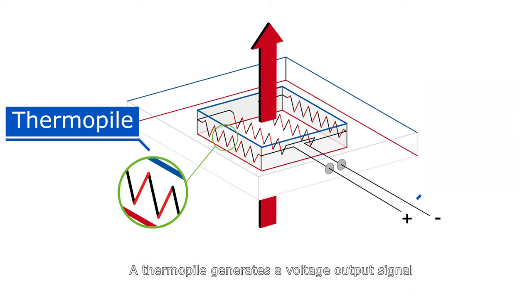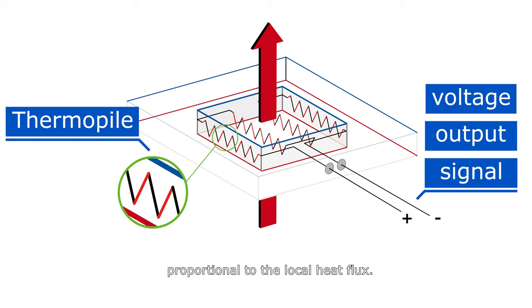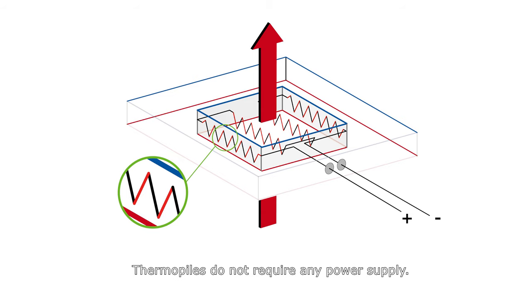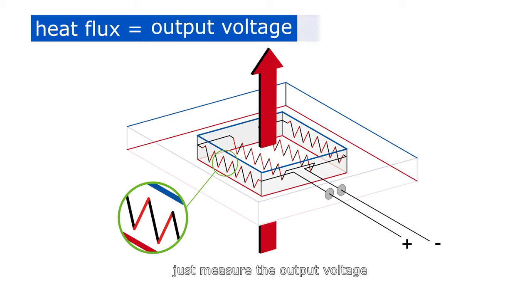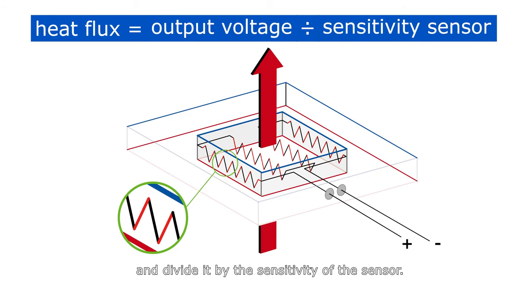A thermopile generates a voltage output signal proportional to the local heat flux. Thermopiles do not require any power supply. Calculating the heat flux is easy. Just measure the output voltage and divide it by the sensitivity of the sensor.